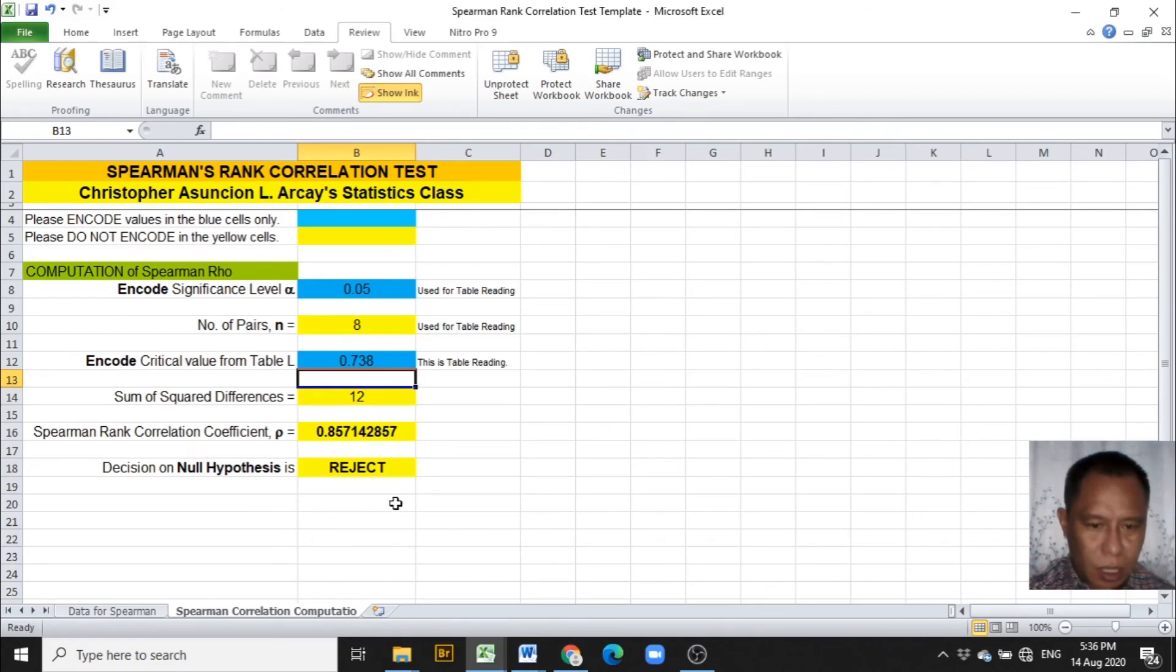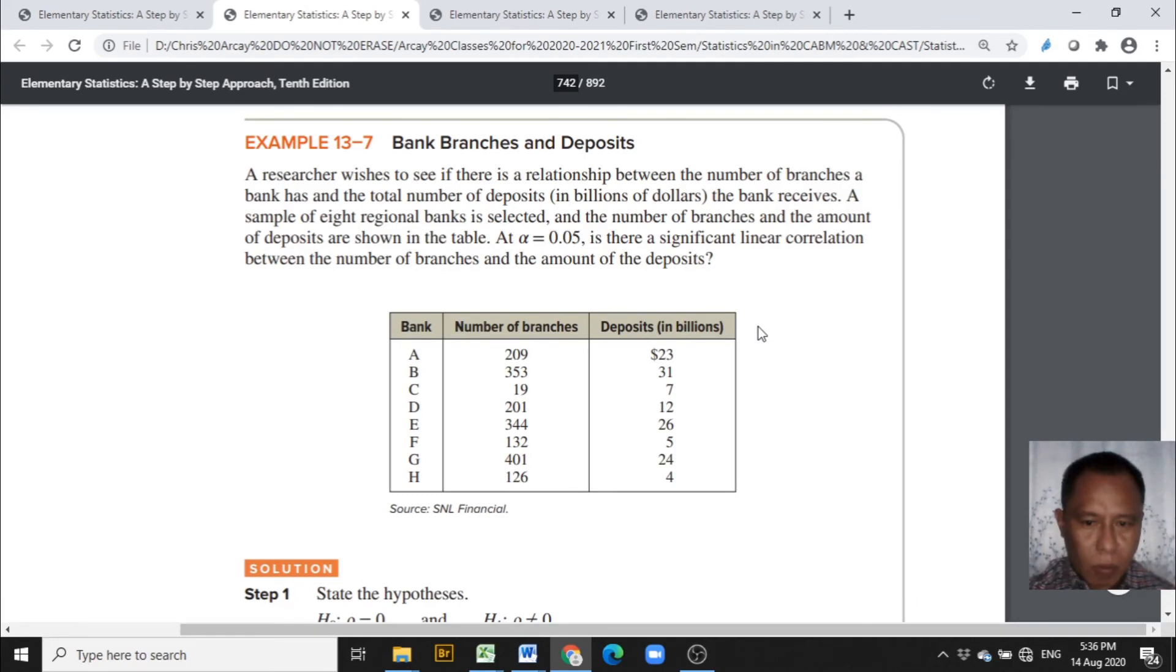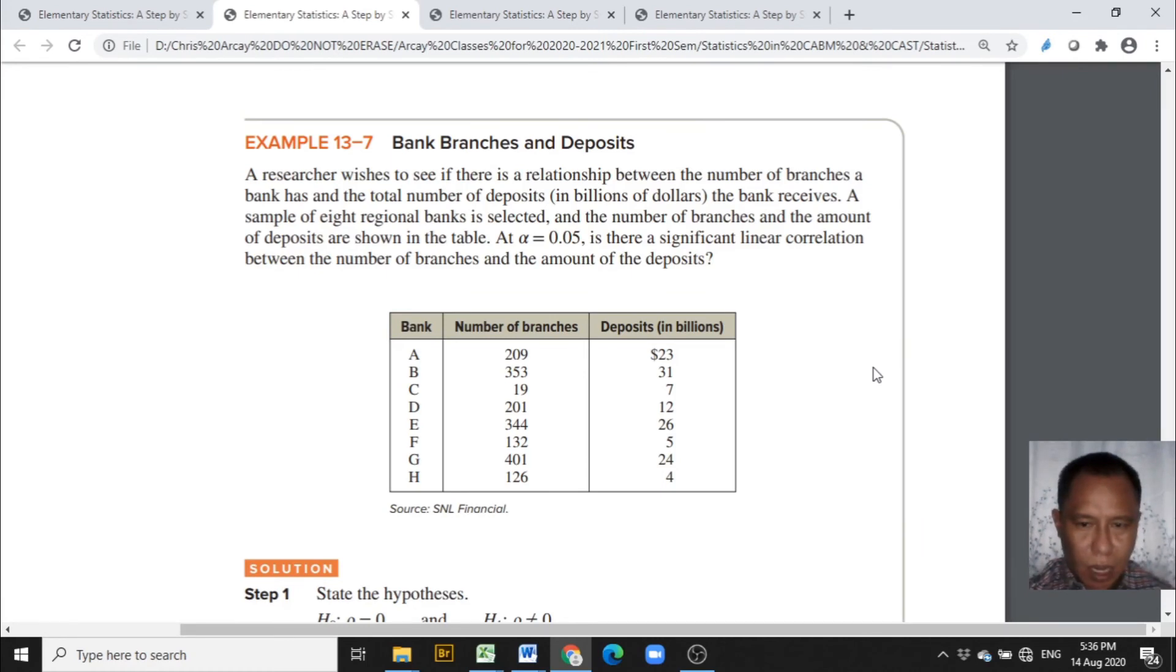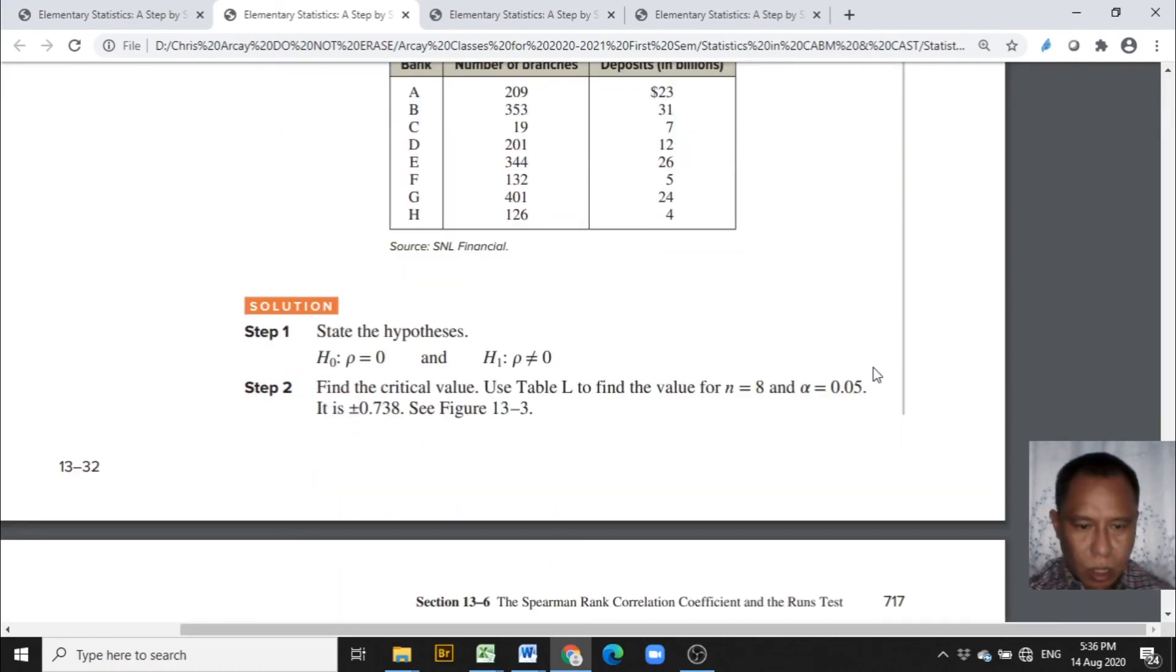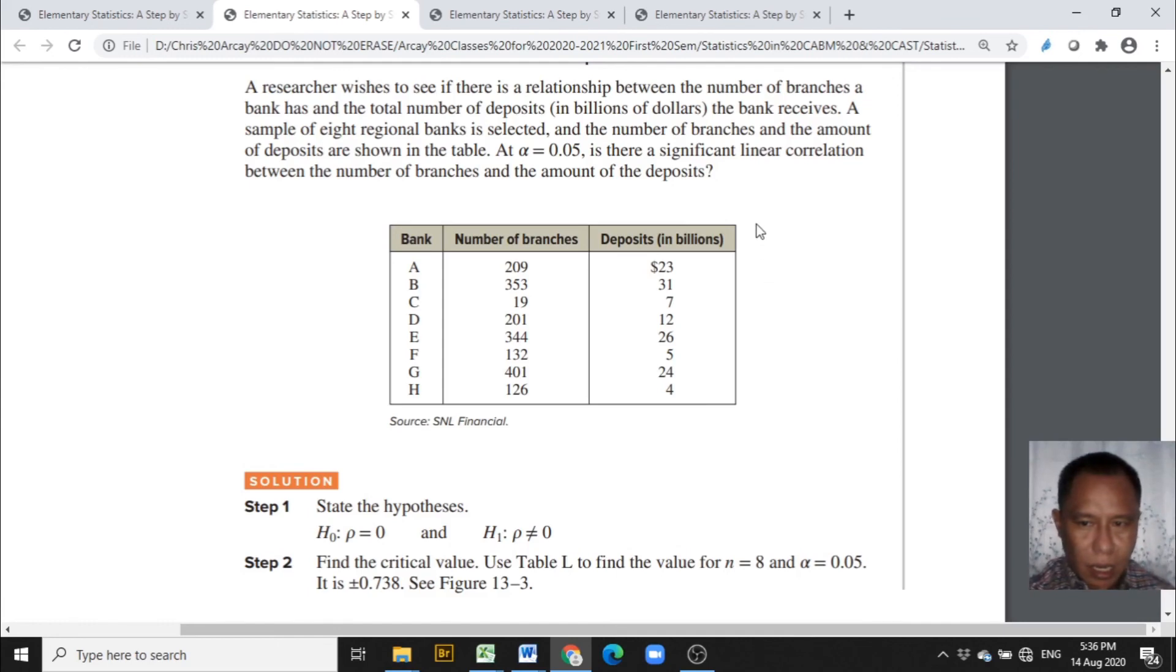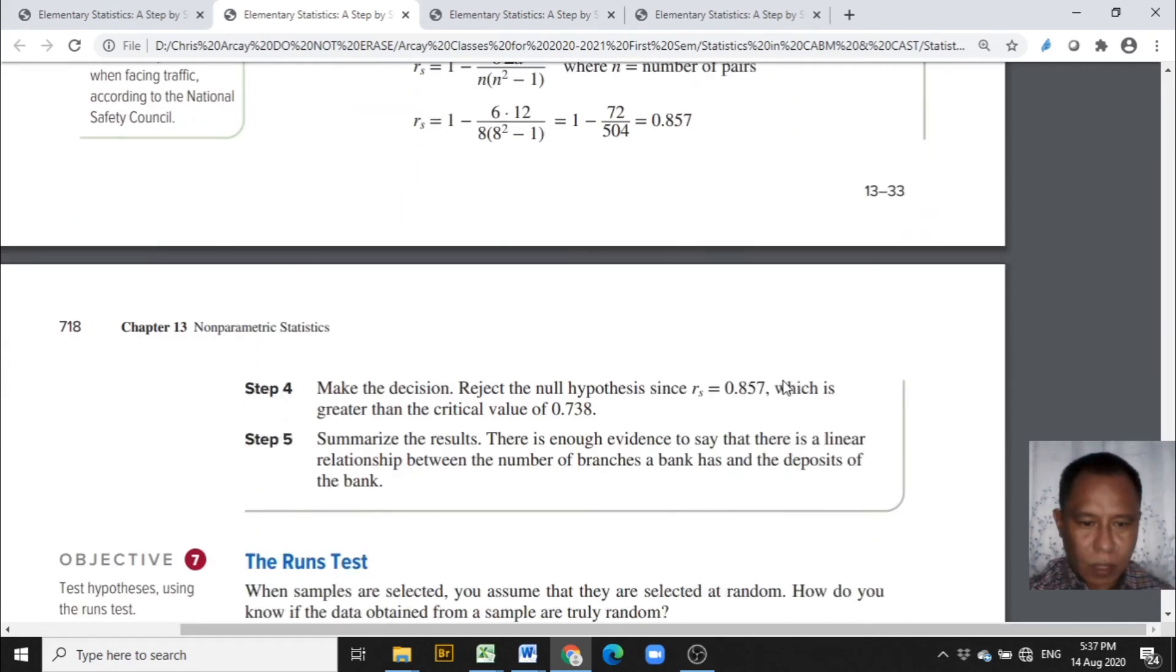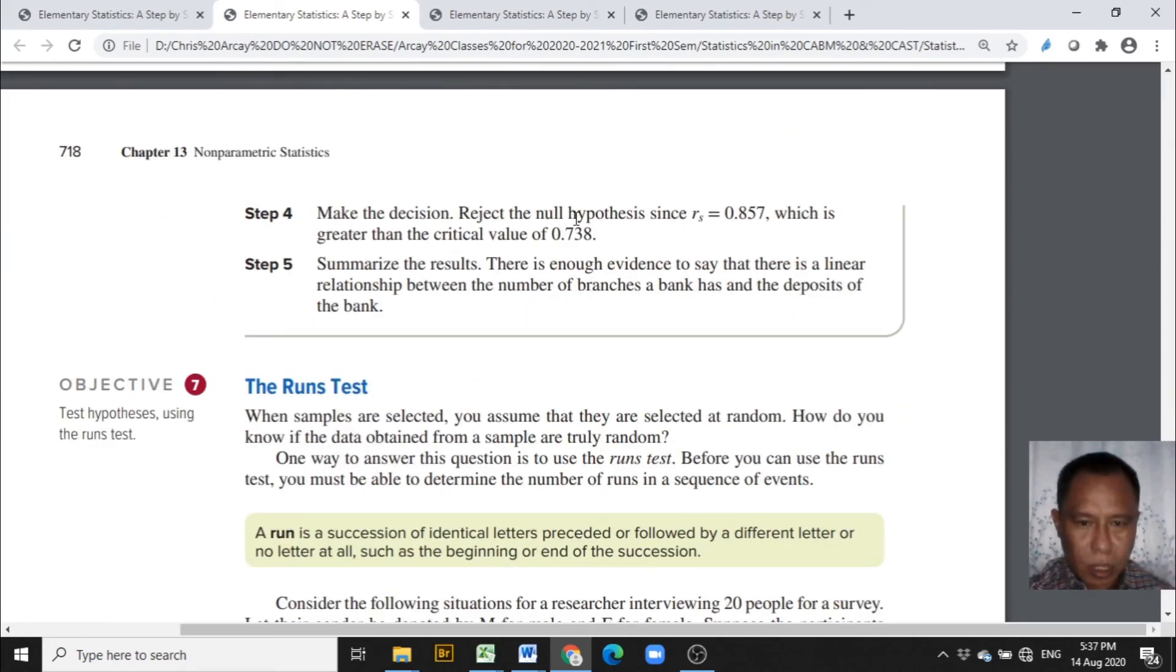The decision on the null hypothesis is reject. Which means that in the problem, the number of branches of the banks and the deposits in billions of dollars, we are going to reject the null hypothesis that they are not related, which means that they are linearly correlated. This is also the answer of the text. Null hypothesis to be rejected. Enough evidence to say that there's a linear relationship between the number of branches a bank has and the deposits of the bank.